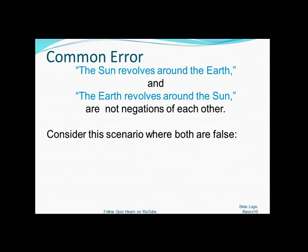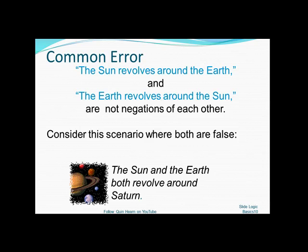To understand this, consider a scenario where both of them would be false. Let's suppose that in our universe, the sun and earth both revolved around Saturn. Then in this case, both of the statements would be false. The sun doesn't revolve around the earth, and the earth does not revolve around the sun.